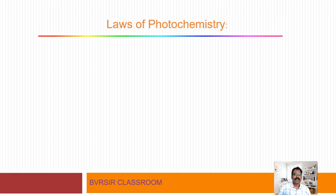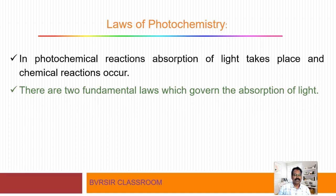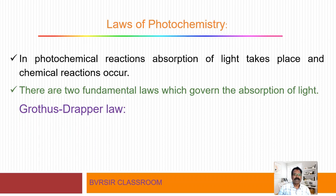There are two important laws governing photochemistry. The first is the Grotthuss-Draper law, and the second is the Stark-Einstein law. These two laws will be explained. In photochemical reactions, absorption of light takes place and a chemical reaction occurs. There are two fundamental laws which govern the absorption of light.